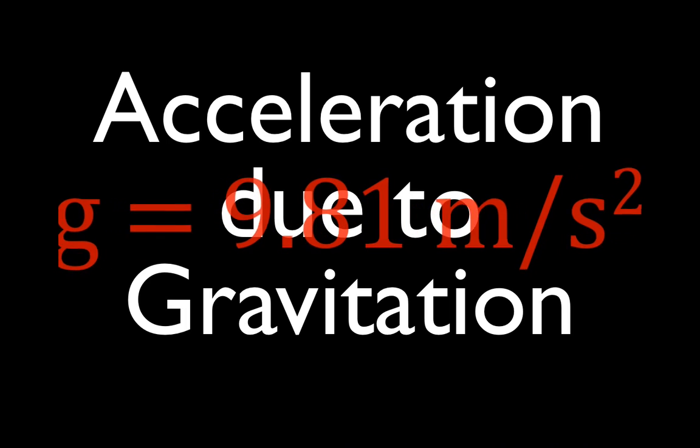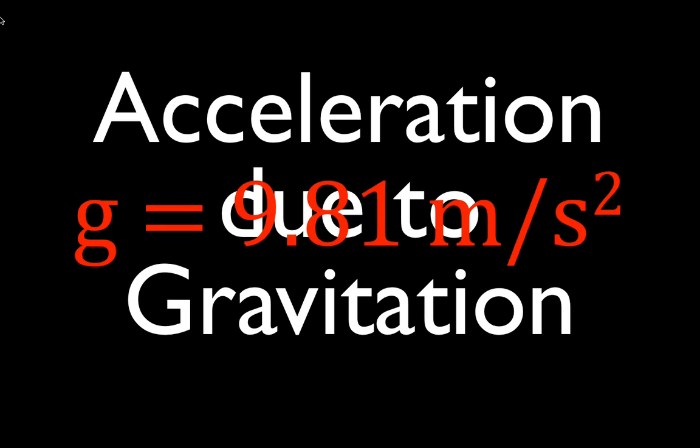In today's video, I'm going to go over how to calculate the acceleration due to gravity. Most people already know that the acceleration due to gravity on the Earth, or near the surface of the Earth, is 9.81 meters per second squared. That's G — the abbreviation for the acceleration due to gravity — and on the Earth's surface it equals 9.81 meters per second squared.